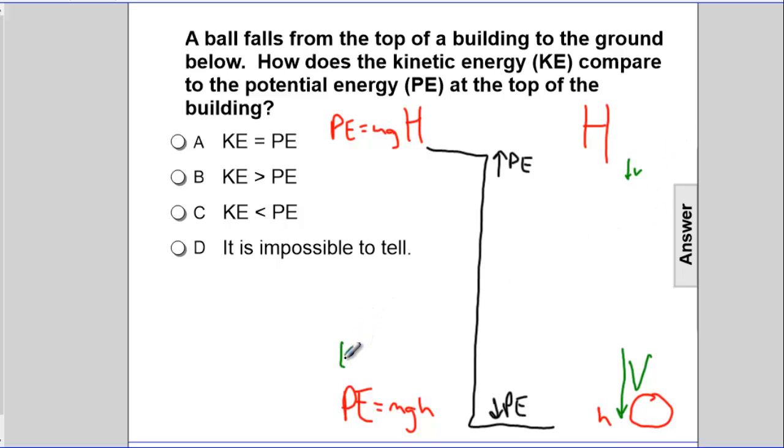We also know that KE is one-half mv squared. So if we have a small velocity, we have a small KE. If we have a large velocity, we have a large KE.